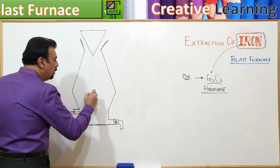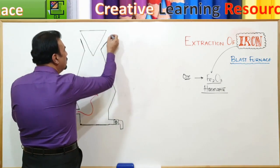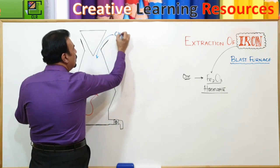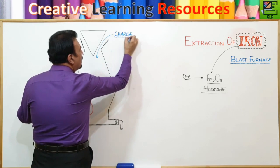This temperature can reach up till 1900 degrees. Once this air comes in, then what will happen? We are introducing the charge from the top. And what is the charge? The charge includes three important things.